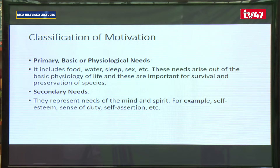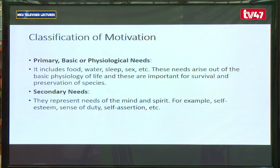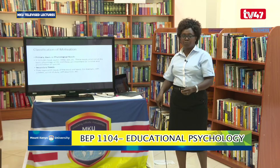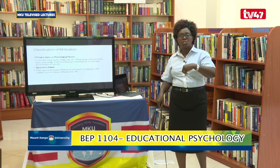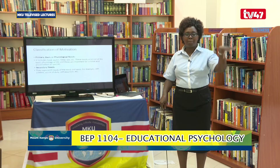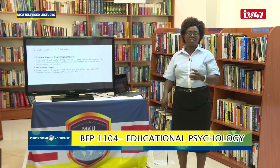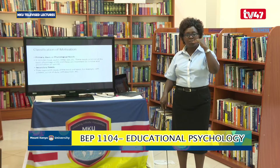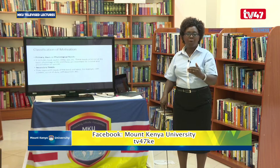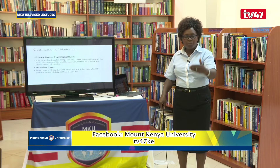From there, we look at the classification of motivation. Basically, there are two classes of motivation. The first are called primary, basic, or physiological needs. These are innate — we can't do without them. We all need food, water, and sleep. Even Maslow talked about the need for intimate relationships. These needs arise out of the basic physiology of life and are important for survival and the preservation of the species. We can't survive without food, and especially not without water. This is evident even now during COVID-19, where people are asking for hours to go out and look for food.